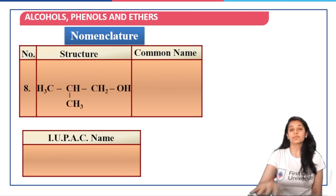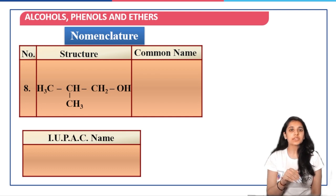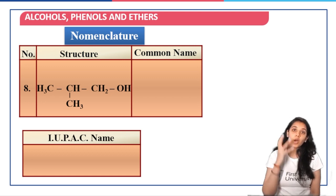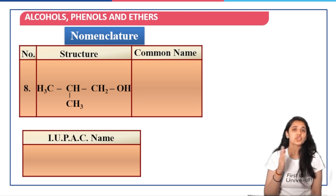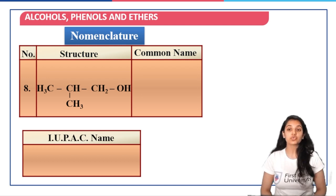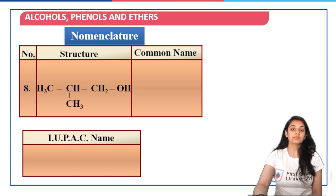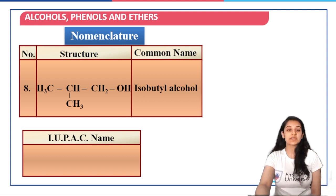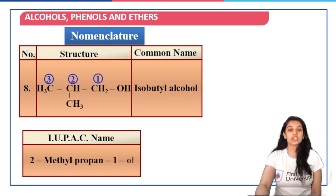Next structure is tertiary butyl alcohol and the IUPAC name would be 2-methylpropane-2-ol. Now, just pause the video the moment I give you the structure and think about the IUPAC name. Common names should be known to you; even if you don't know the common name, that's perfectly fine, but you should be able to predict the IUPAC name. For this particular structure, the common name is isobutyl alcohol and the IUPAC name is 2-methylpropane-1-ol.